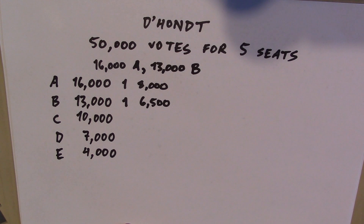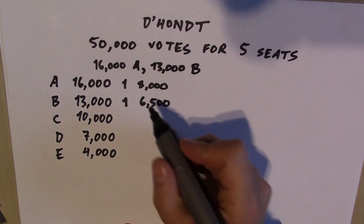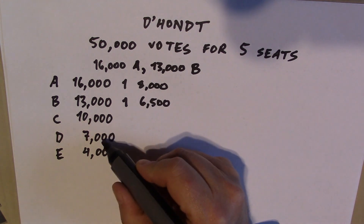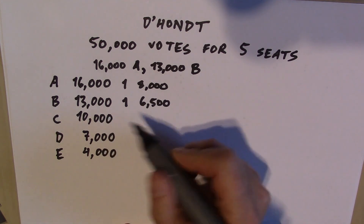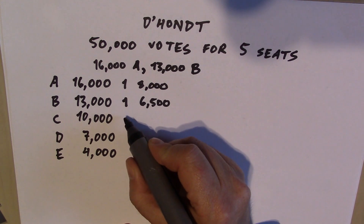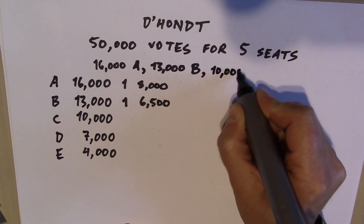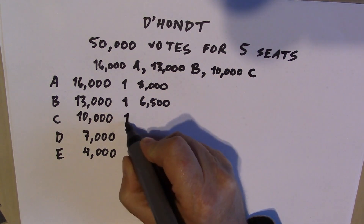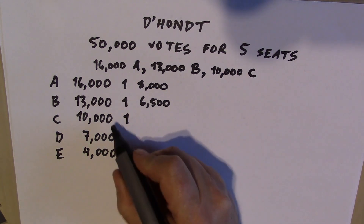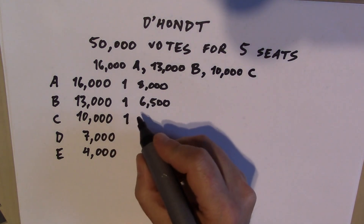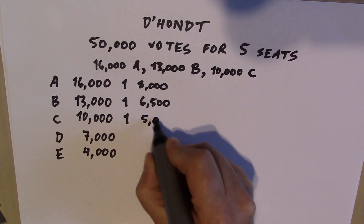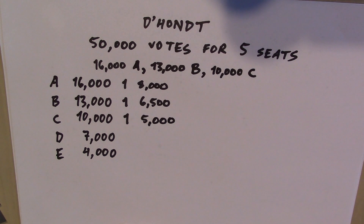We have to bring the price down a little more. Below 13,000, the next number that would make a difference to results could be 8,000, 6,500, 10,000, 7,000, or 4,000. The next is 10,000, so we reduce the price of a seat to 10,000 — Party C gets a seat, and Party C will be able to get a second seat if the price comes down to 5,000. We've awarded 3 seats; we want to award 5, so we keep going.